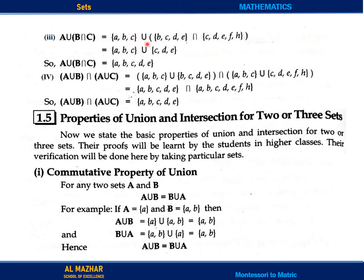Now set B intersect set C. The intersection — which elements are common — are C, D, E. So these three common elements are the intersection of B and C. Then A union bracket B intersect C — the common ones will intersect.